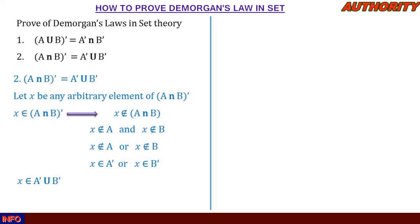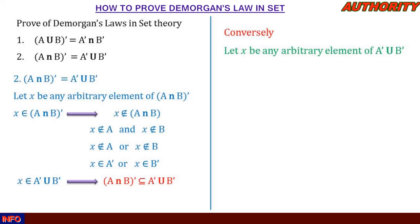So x exists in A complement or x exists in B complement, meaning x exists in A complement union B complement. We began with x in (A intersection B) complement and ended up with x in A complement union B complement. Therefore, (A intersection B) complement is contained in A complement union B complement.